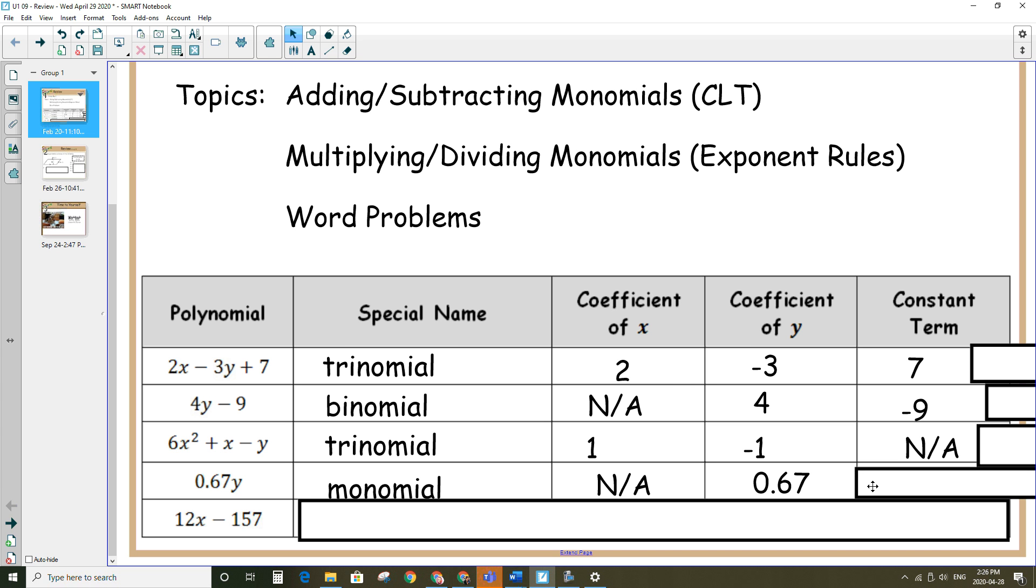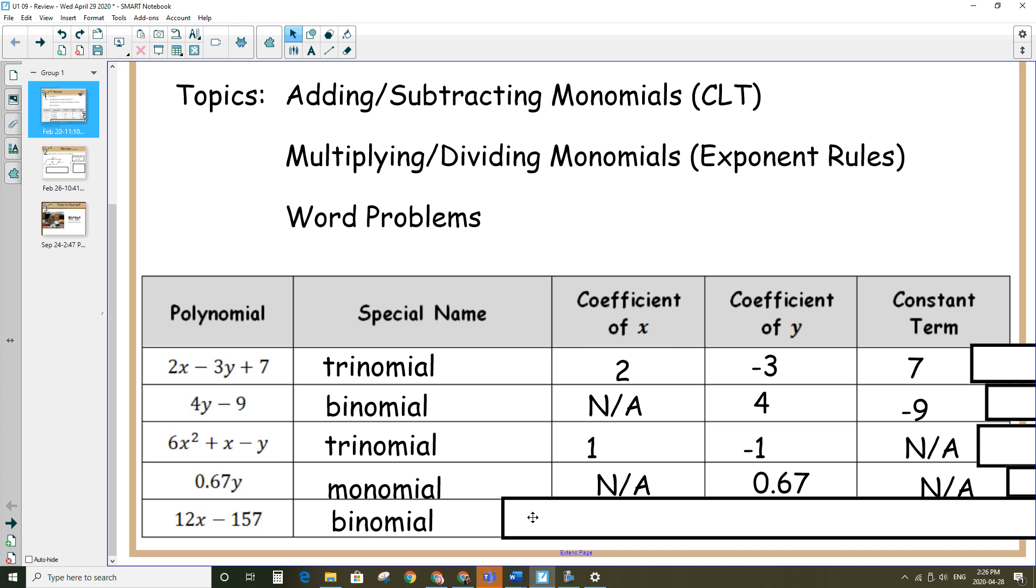And the last one, this one has two terms, so we'll call it a binomial. Coefficient of x would be 12. Coefficient of y, there isn't one. And the constant term is going to be negative 157.